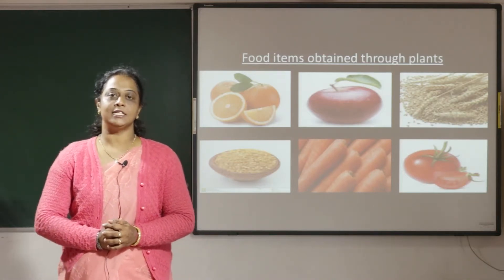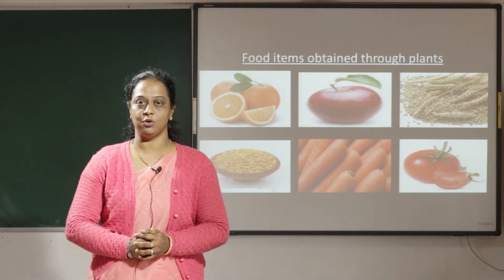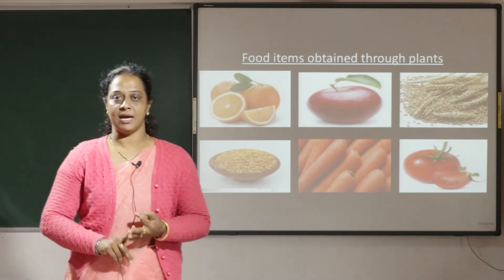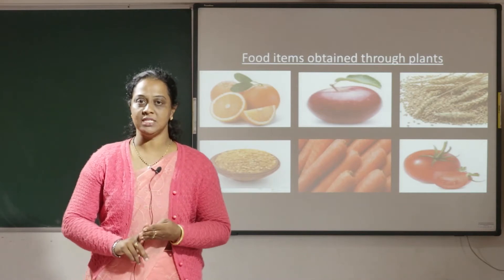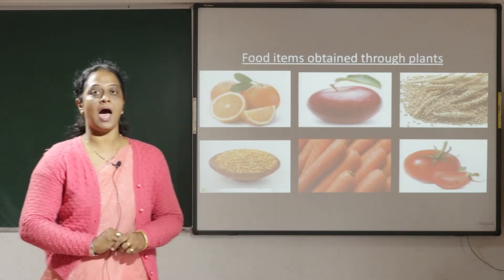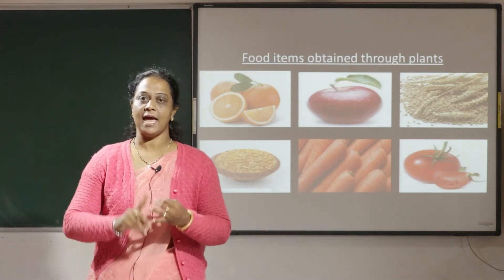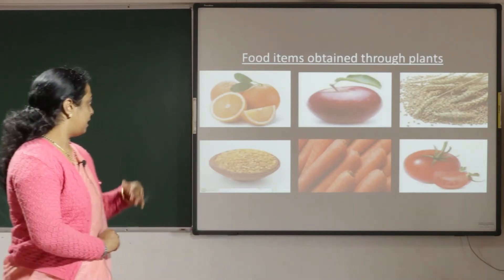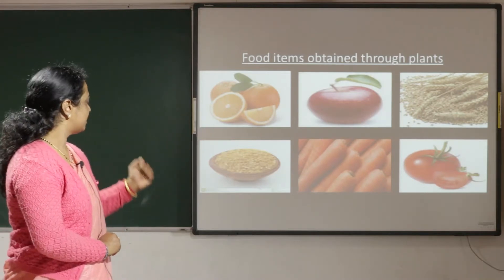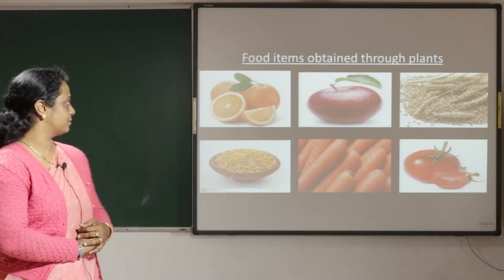The food items which we obtain from plants include fruits, vegetables, rice, wheat, and crops, which are highly rich in fiber, protein and carbohydrate. These are orange, apple, wheat, dal, carrot and tomatoes.